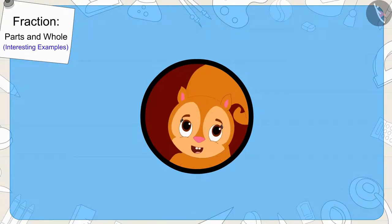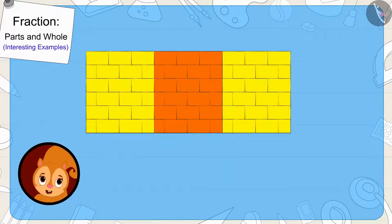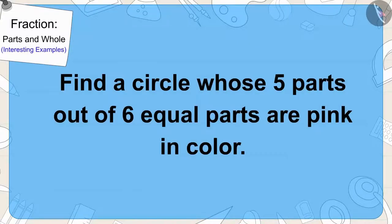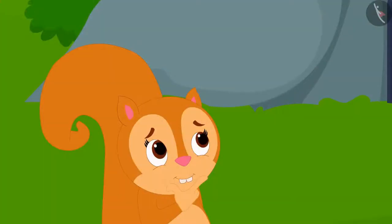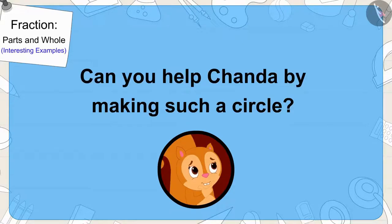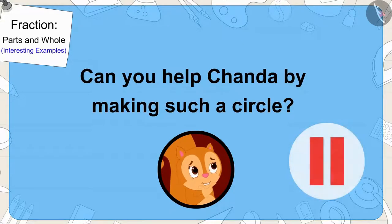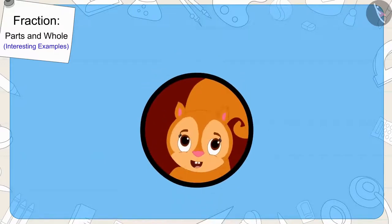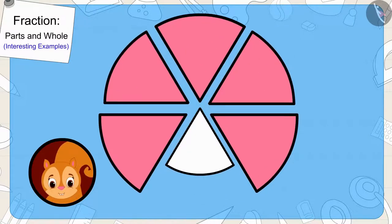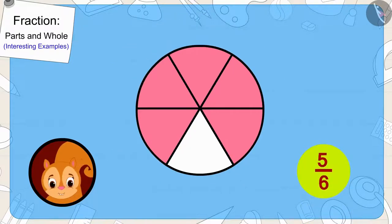Well done, children! In this way, we can fill yellow colour in two-thirds of the roof. Now, Chanda found her last clue near Golu's house. It was written that she has to find a circle whose five parts out of six equal parts are pink in colour. Can you help Chanda by making such a circle? You can find the answer by stopping the video. Well done — you have made it perfectly! There are six equal parts and five of them are pink. We can write it as a fraction in this way.